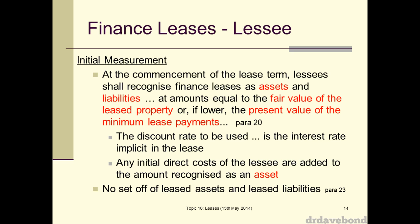For initial measurement — when you enter into the contract at the commencement of the lease term — this is for a finance lease and this is for the lessee, the party getting use of the asset. The lessee shall recognize finance leases as assets and liabilities, at amounts equal to the fair value of the lease property, or the present value of the minimum lease payments, whichever is lower. Take those two numbers, take the lower one, and that is the number you use as both the asset and the liability.